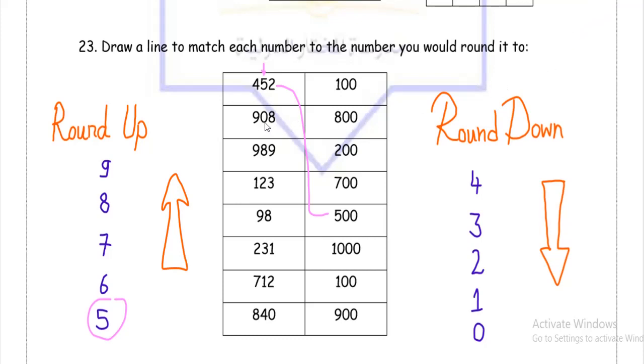Next is 908. Look at the tens place value — I've got 0 in there. And 0 rounds down. So I'm going to round 908 to 900.